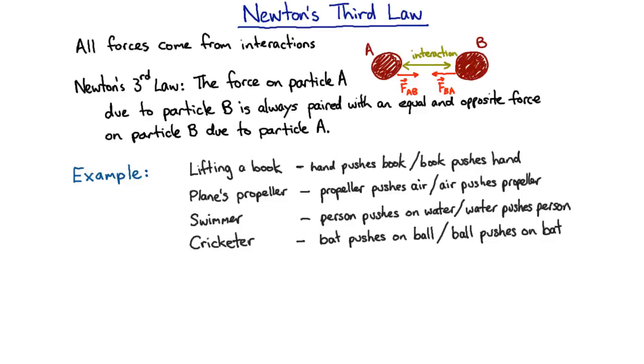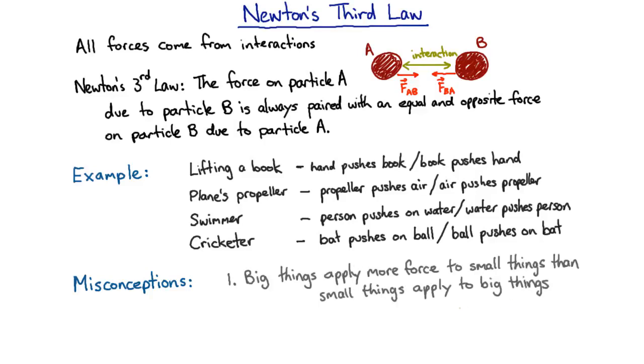Now, there are some very common misconceptions that people fall into when they look at Newton's third law. The first is, when a big thing interacts with a small thing, that the big thing applies a bigger force. For example, if you step on a blade of grass, then yes, there's a very large force on that blade of grass from your body weight, but in fact, there's an equal and opposite force from that blade of grass up on you. Even though that force is equal, the same force will do a lot more to a blade of grass than it will do to a foot. The real way this works is that big things respond to forces less sensitively than small things.